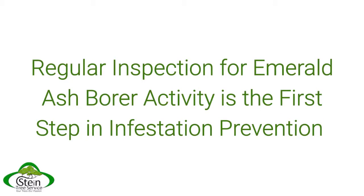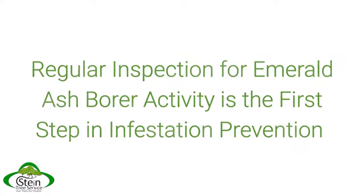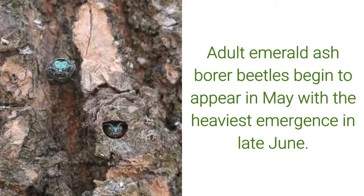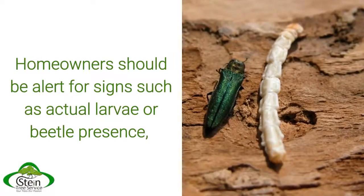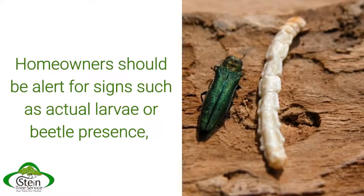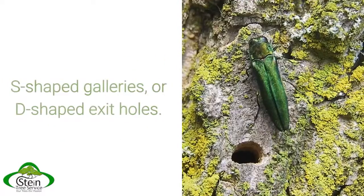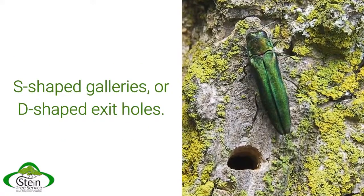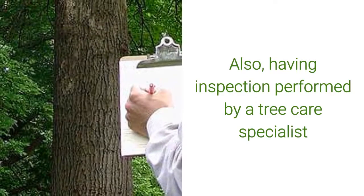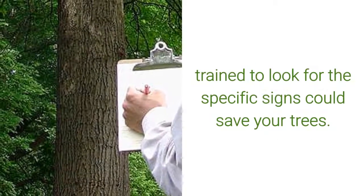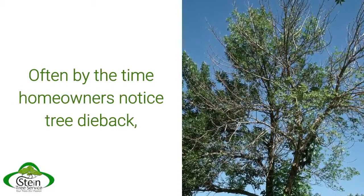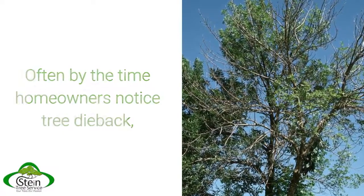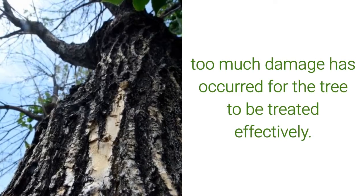Regular inspection for emerald ash borer activity is the first step in infestation prevention. Adult emerald ash borer beetles begin to appear in May, with the heaviest emergence in late June. Homeowners should be alert for signs such as actual larvae or beetle presence, S-shaped galleries, or D-shaped exit holes. Having inspection performed by a tree care specialist trained to look for the specific signs could save your trees, as often by the time homeowners notice tree dieback, too much damage has occurred for the tree to be treated effectively.